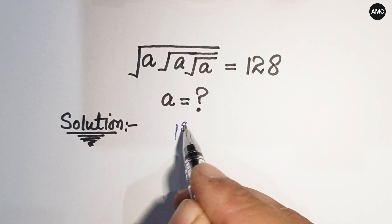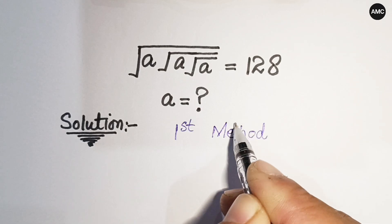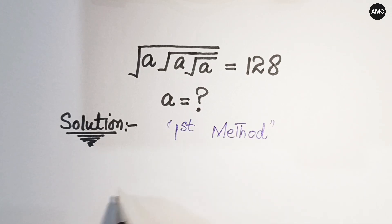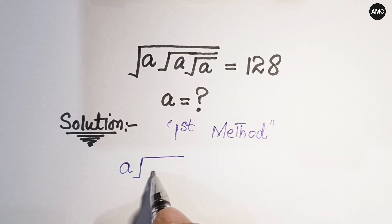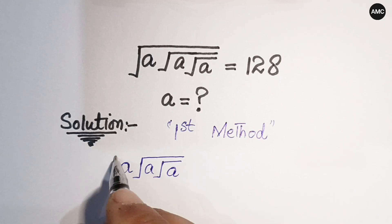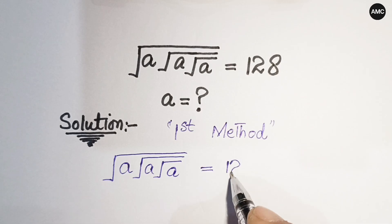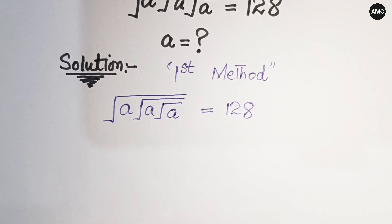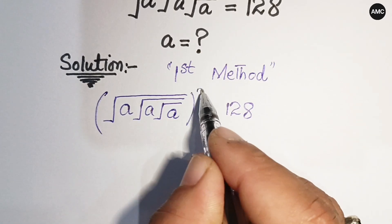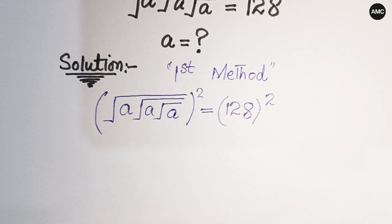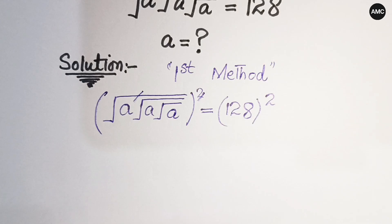According to Method 1, our problem is: the square root of (a times square root of a times square root of a) equals 128. Now if we take the square on both sides, this square cancels out with the square root.